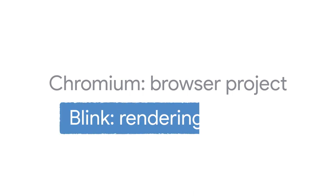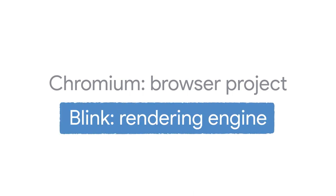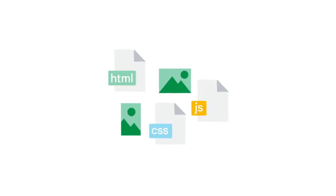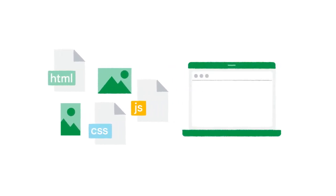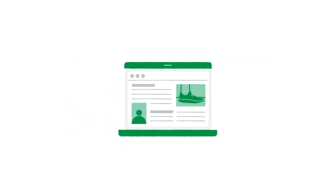You may have heard of Chromium — this is the open source browser project on which Chrome and some other browsers are built. Chromium has several components. Blink is the rendering engine used by Chromium, and the rendering engine of a web browser is the part of the software used to transform HTML, CSS, and JavaScript along with images and other resources into web pages that you can view and interact with. I'm Sam Dutton, and in this video I'll give you an overview of what Blink is and how it works.